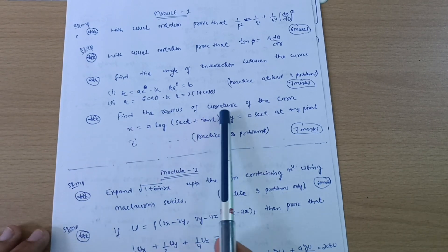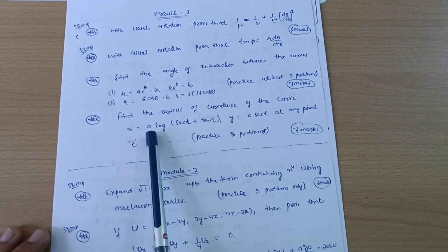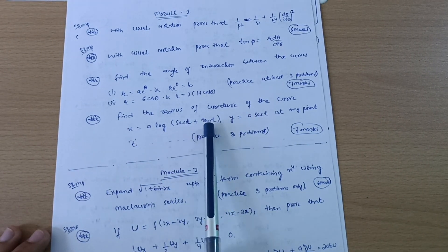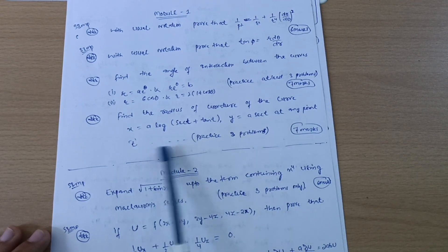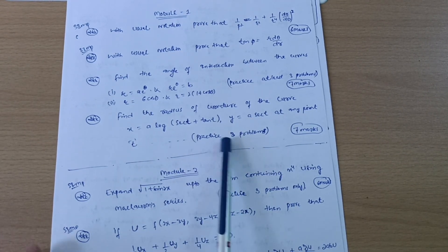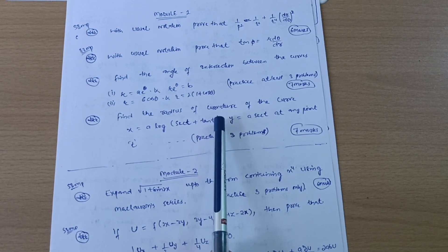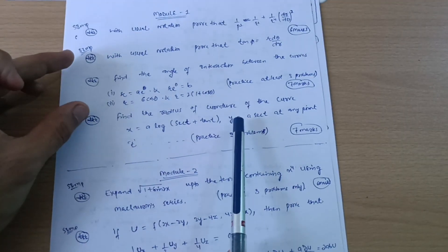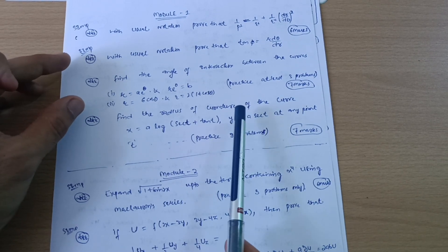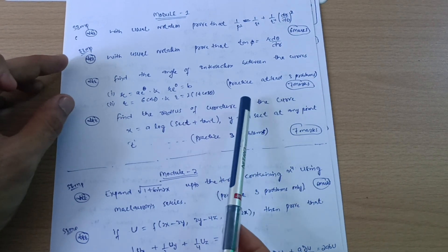Next is find the radius of curvature of the curve x is equal to a log sec of t plus tan of t, y is equal to a sec of t at any point. Also you should go through three problems on the radius of curvature concept. It carries seven marks. So only these three concepts you should go through and you can easily get 14 marks, at least you will get 14 marks if you practice well.